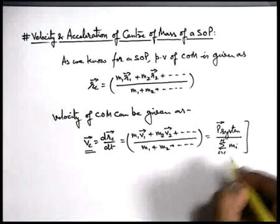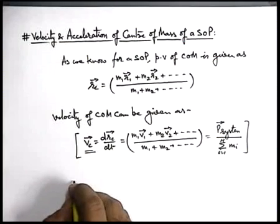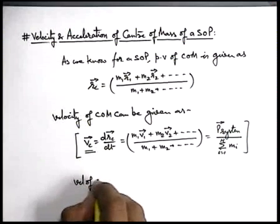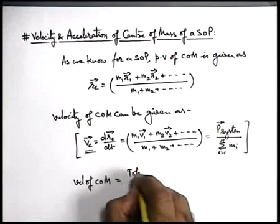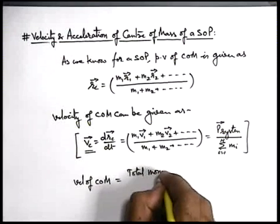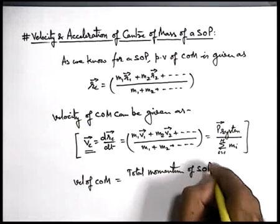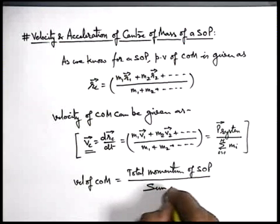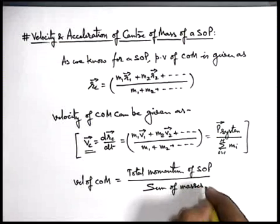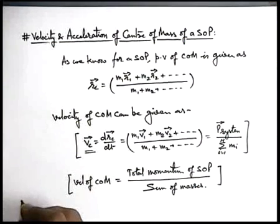This is a very useful relation for the velocity of centre of mass. You can directly write: velocity of centre of mass of a system of particles equals total momentum of the system divided by the sum of masses in the system. This is the expression we use for finding the velocity of centre of mass.